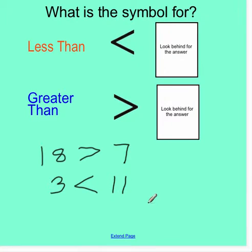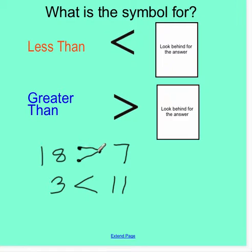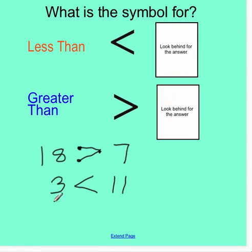Sometimes kids have a hard time remembering which way the symbol goes. Here are a couple of tricks that can help you. You can put two dots by the big number and one dot by the small number and connect your dots, and your symbol will always be drawn correctly. Other kids like to think of the symbol as an alligator's mouth and they will say the alligator's mouth eats the bigger number. Whatever works for you is just fine.